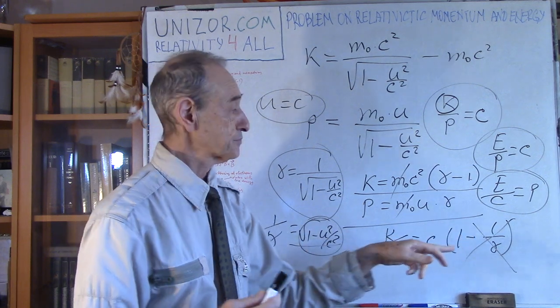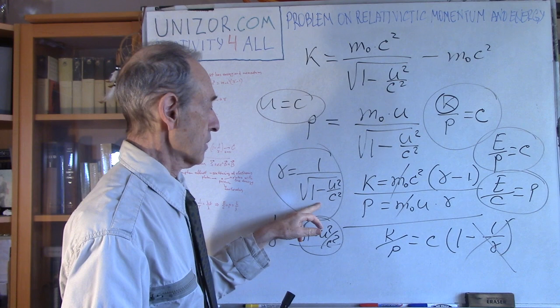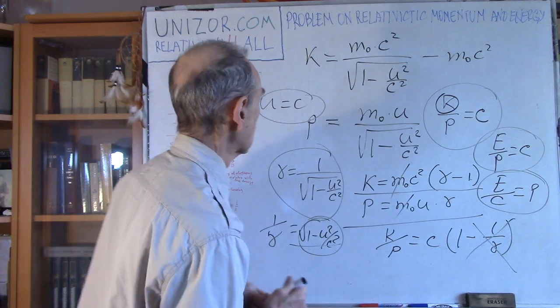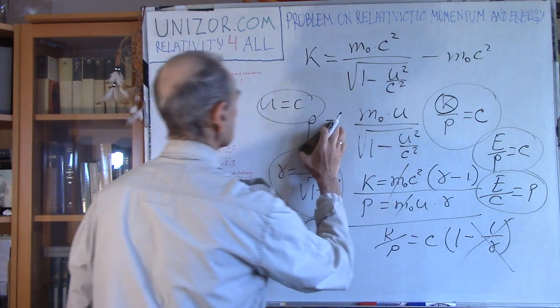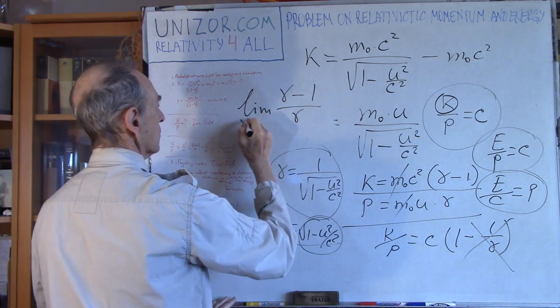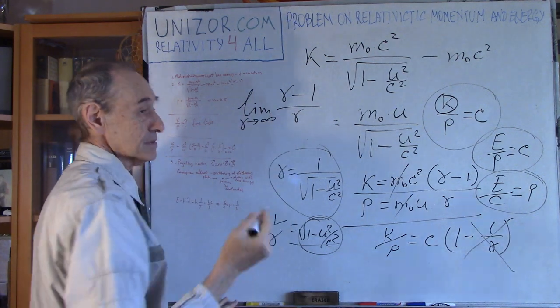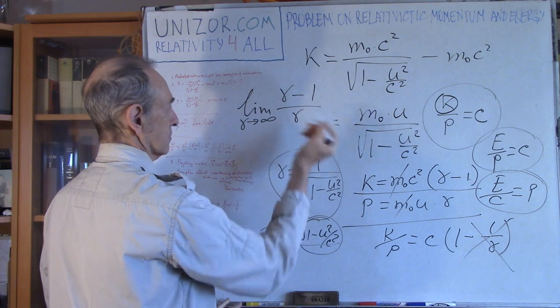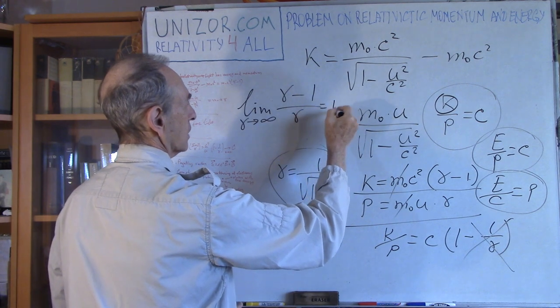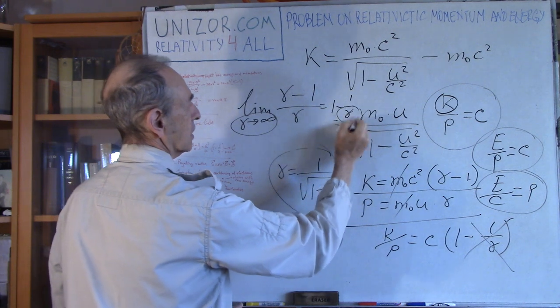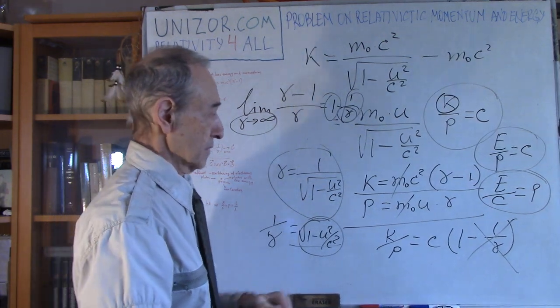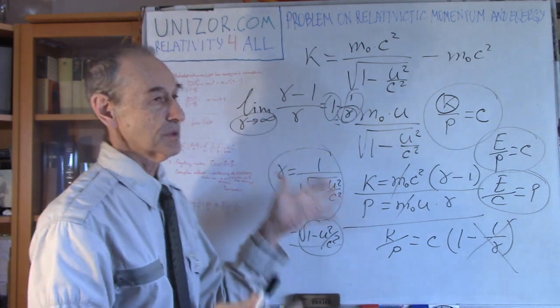Even in this case, it's very simple. Gamma is going to infinity—if u equals c, that would be one minus one, so zero in the denominator. What is the limit of gamma minus one divided by gamma if gamma tends to infinity? It's simple: dividing member by member by gamma gives one minus one over gamma. If gamma goes to infinity, that goes to zero, and you have one as a limit. I did exactly the same here, just didn't use the word limit.